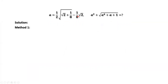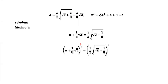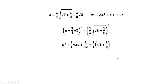From the given condition, add one-eighth times square root of two to both sides. Then we square both sides and simplify. On the right-hand side, one-fourth times one-eighth equals one over thirty-two. Subtract one over thirty-two from both sides to get this result.